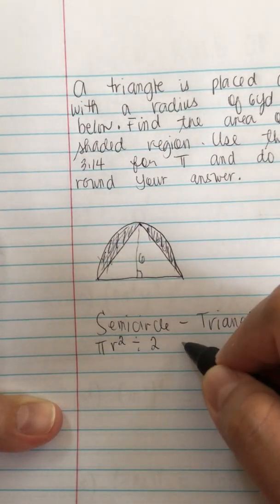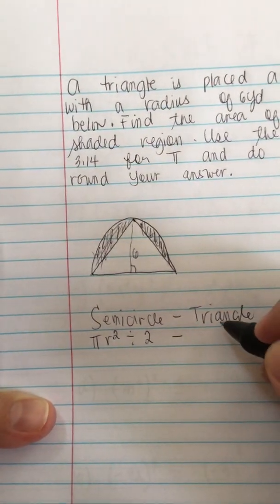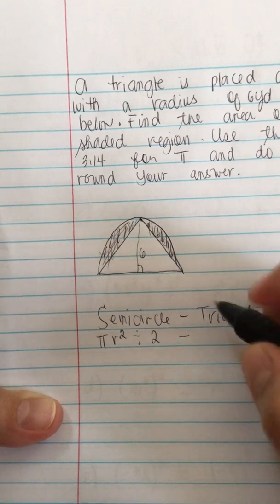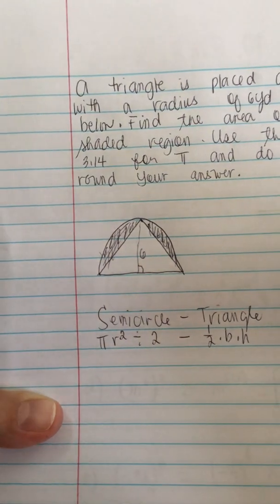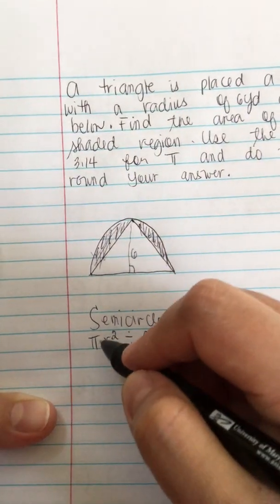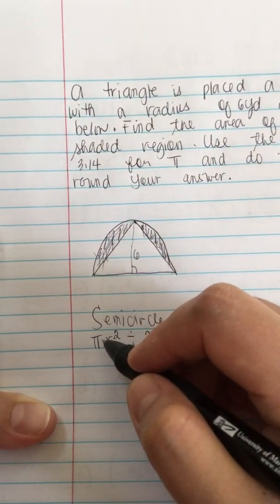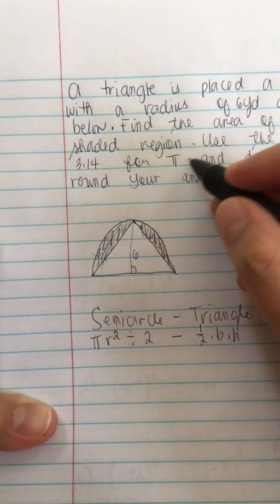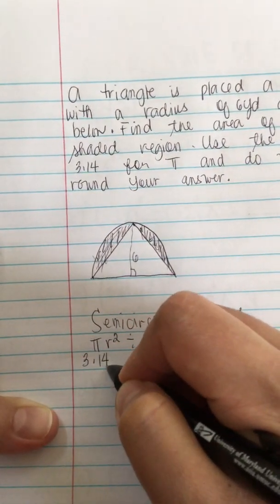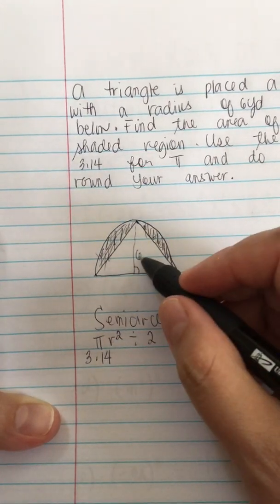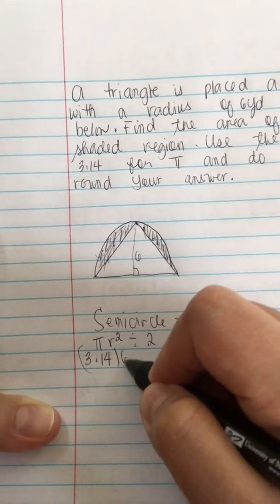The semicircle formula is pi r squared divided by 2, and the triangle formula is one half times base times height. We use 3.14 for pi, and r is equal to 6, so 6 squared.